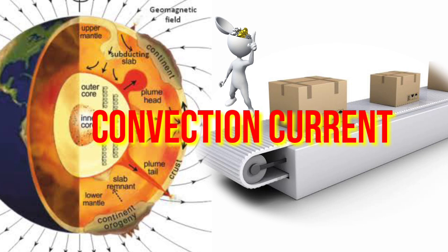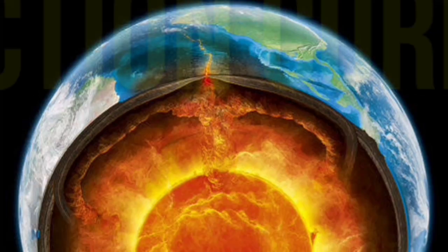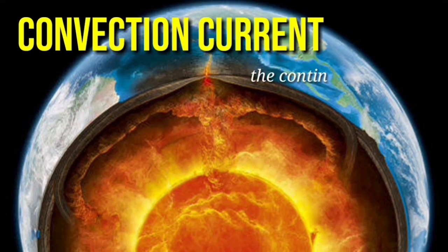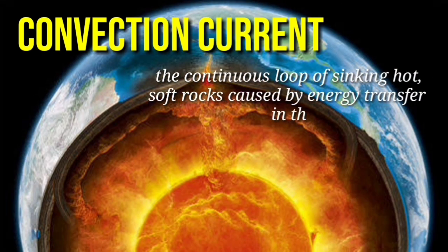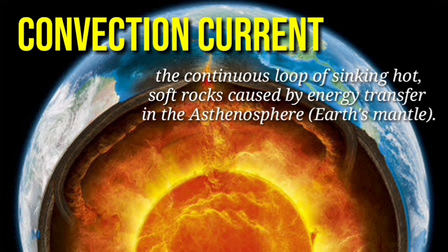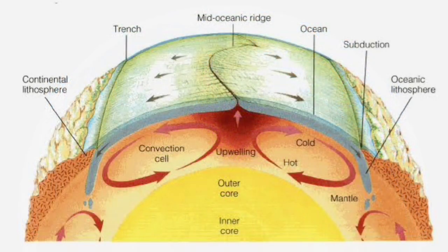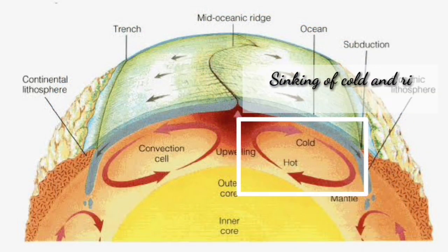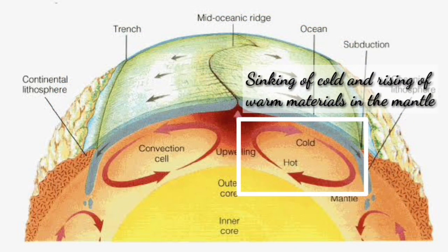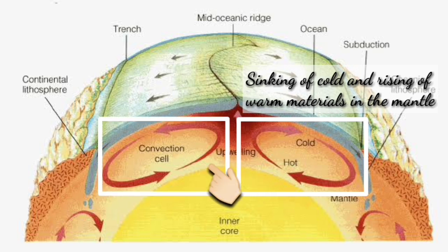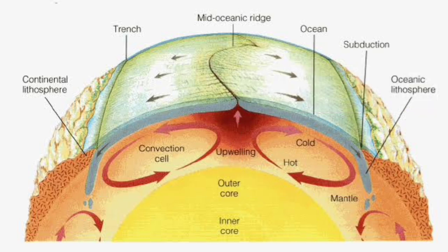What is a convection current? Convection helps to move heat within the earth. Convection current refers to the continuous loop of sinking hot soft rocks caused by energy transfer in the asthenosphere. Convection creates loops of sinking and rising materials in the mantle. This circular pattern is called a convection cell, which carries heat to the surface of the mantle much faster than heating by conduction. A convecting mantle is an essential feature of plate tectonics.